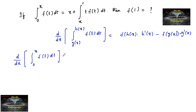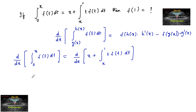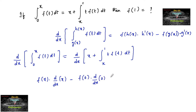This equals d/dx of x plus integral x to 1 of t·f(t) dt. Applying the rule on the left: f(x)·(d/dx of x) minus f(0)·(d/dx of 0) equals 1 plus differentiation of the integral x to 1.